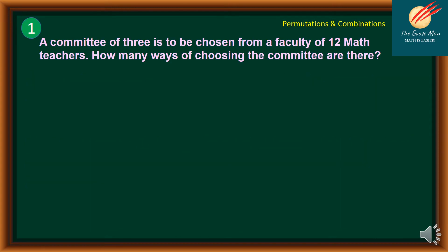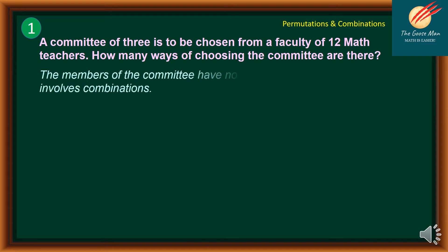Let's consider problem number one. A committee of three is to be chosen from a faculty of twelve math teachers. How many ways of choosing the committee are there? Since the members of the committee have no particular position, this problem involves combination. Take note that n is equal to 12 and r is equal to 3, meaning there are 12 math teachers and we will take 3 at a time.